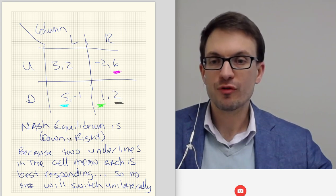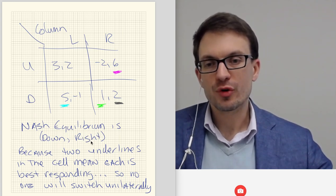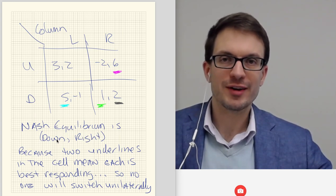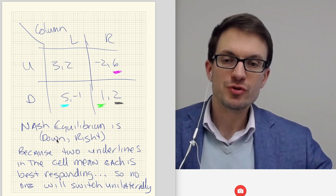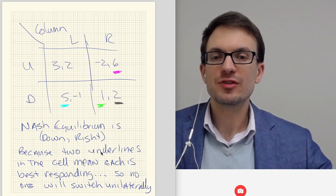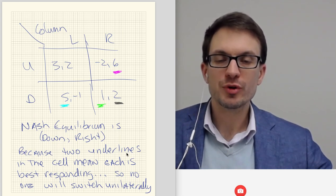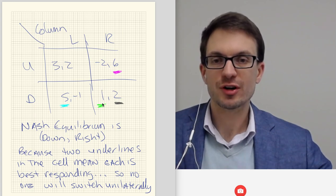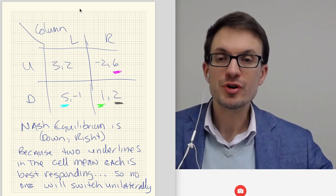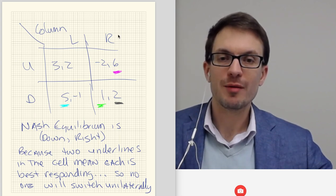The strategy profile of down-right is a Nash equilibrium because while column player is choosing right, row player doesn't want to do anything other than down. And while row player is doing down, column player doesn't want to do anything other than right. So indeed, because these two underlines in the cell mean each is best responding, no one will switch unilaterally. This is a Nash equilibrium. Actually, this is also a prisoner's dilemma.